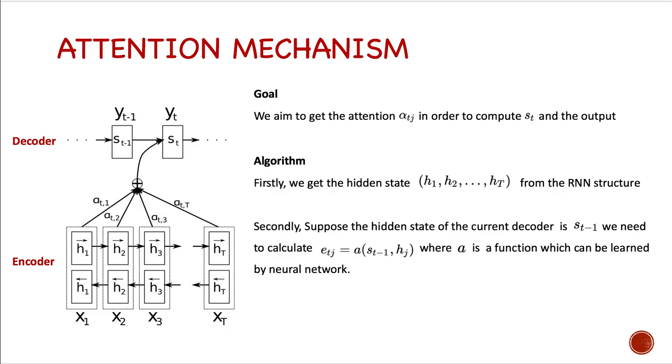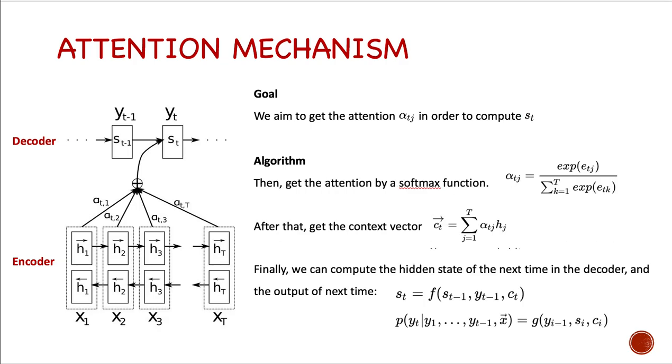which is through A is a function. You can see, you can treat A like a single layer neural network. And then we get attention by a softmax function alpha_{tj}.